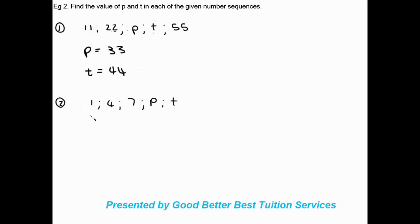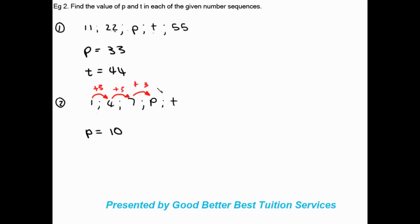For the second sequence: 1, 4, 7, p, t. What is the relationship between these? It looks like we're adding 3 each time: 1 + 3 = 4, 4 + 3 = 7 — confirmed. So adding 3 to 7 gives p = 10, and adding 3 again gives t = 13.